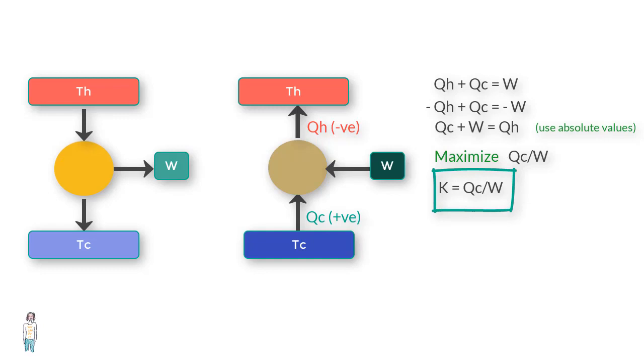K is equal to absolute value of QC upon absolute value of W, which is equal to QC divided by QH minus QC. With the theory we've just understood behind the working of a refrigerator, let us also get a sense of how a real refrigerator operates.